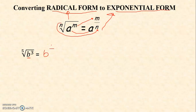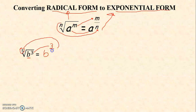If it is a fraction, we have here the numerator and here as the denominator. The numerator of the exponent will be the exponent of b, which is 3. And always remember that your index is always the denominator of the exponent. So you now have b raised to 3 over 5.